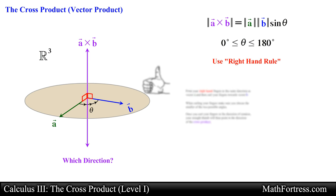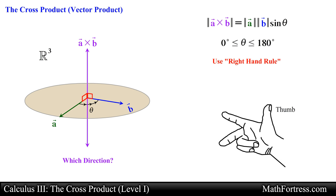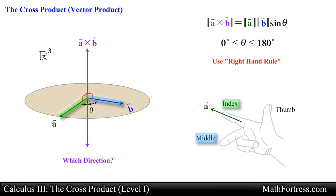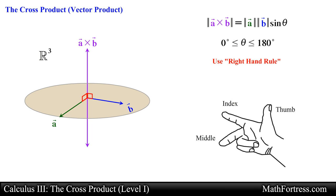A second way to think about the right-hand rule is by using three fingers: your thumb, index finger, and middle finger. The index and middle finger represent the vectors being crossed with one another — these are the vectors lying in the same plane. Your index finger points in the direction of the first vector (vector a), and your middle finger points in the direction of the second vector (vector b). Once you have aligned those fingers with the corresponding vectors, your thumb will point in the direction of vector a crossed with vector b.